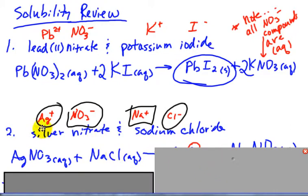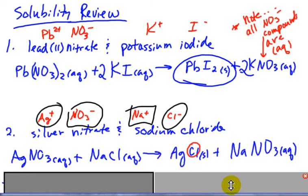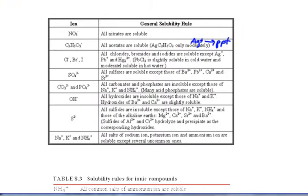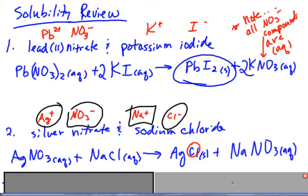When they switch partners: AgCl, NaNO3 - a nice 1 to 1 ratio. Sodium nitrate - all nitrates are soluble, so NaNO3 must be aqueous. That means the precipitate must be silver chloride. If we go back to that chart to ensure: chloride combined with silver is PPT.